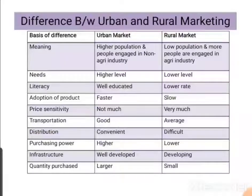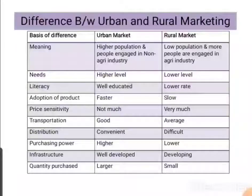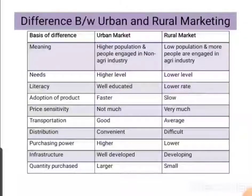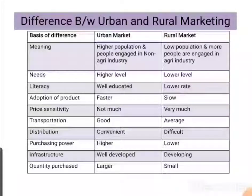Purchasing power is another difference — urban people have good income and can buy whatever they want, while rural people prefer buying basic items. Infrastructure is well-developed in urban areas and still developing in rural areas. In terms of quantity purchased, urban people buy in large quantities, while rural people buy small quantities or small packets like sachets. This is a major difference between urban and rural marketing.